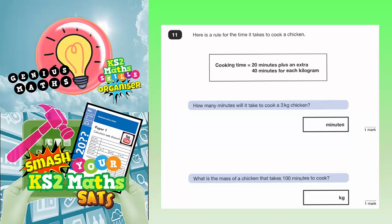Question 11. Here is a rule for the time it takes to cook a chicken. The cooking time is 20 minutes plus an extra 40 minutes for each kilogram.